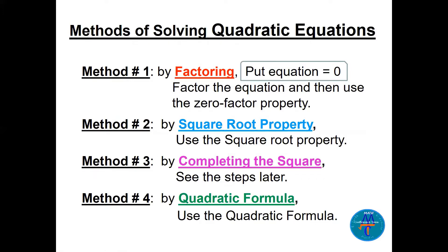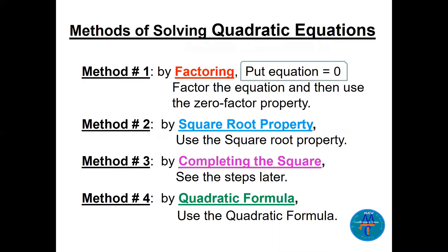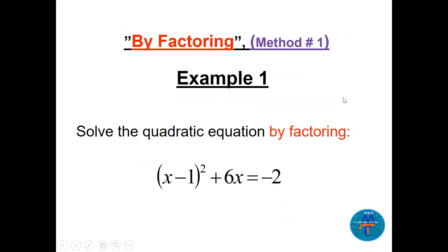Now let's go into details starting with method one: factoring. Example one — solve the quadratic equation by factoring: x minus 1, all squared, plus 6x equals minus 2. We can see the equation is not arranged to factor. The rule is: put the equation equal to zero first, then factor. We have 6x and a perfect square x minus 1 all squared, so we need to expand it.